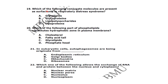Which of the following conjugate molecules are present as surfactant in respiratory distress syndrome? The answer is lipoprotein. Which part of the phospholipid constitutes the hydrophobic zone in the plasma membrane? The fatty acid tails are present in the hydrophobic zone of the plasma membrane.